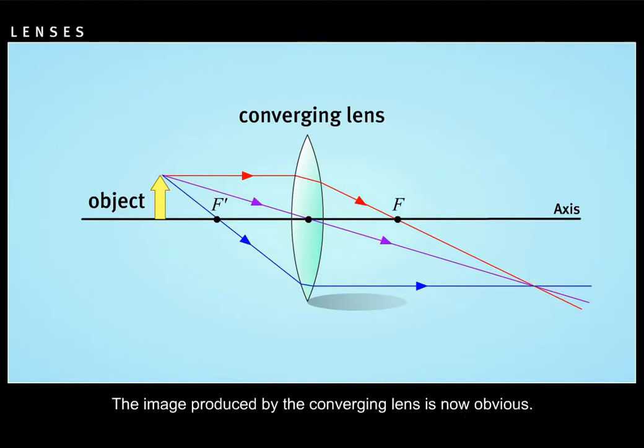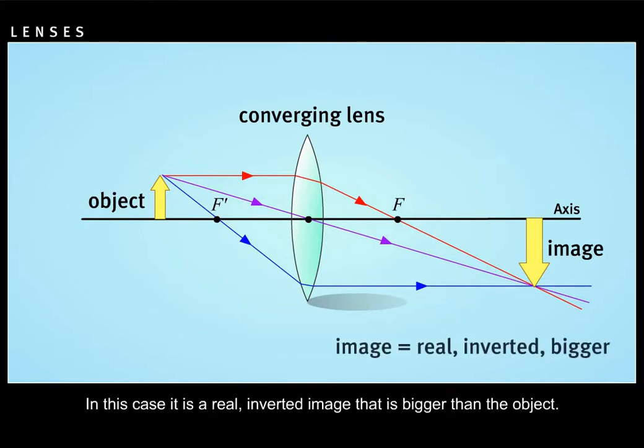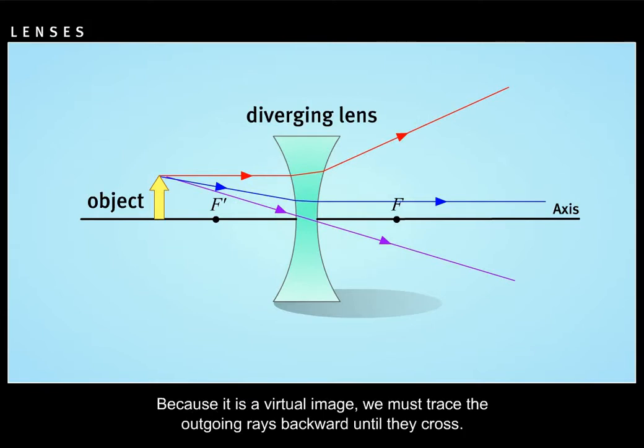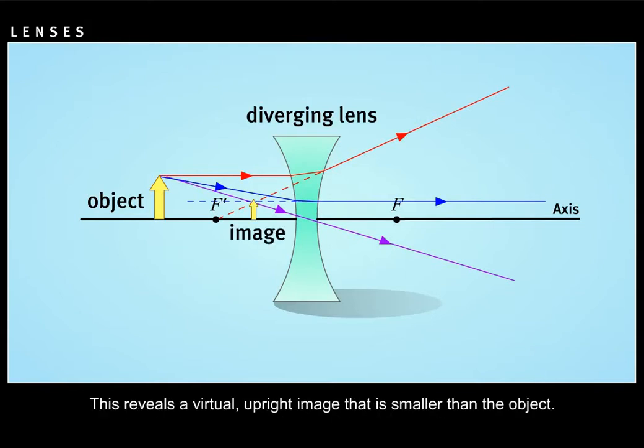The image produced by the converging lens is now obvious. In this case, it is a real inverted image that is bigger than the object. For the diverging lens, the image is slightly more difficult to find. Because it is a virtual image, we must trace the outgoing rays backward until they cross. This reveals a virtual upright image that is smaller than the object.